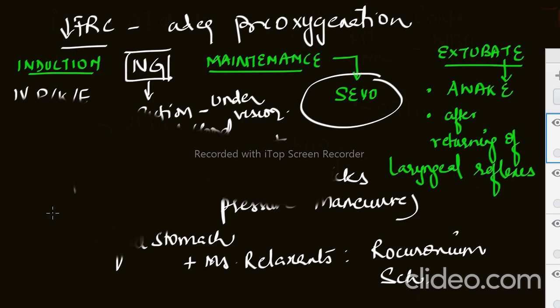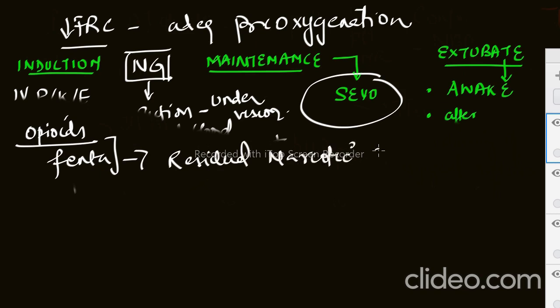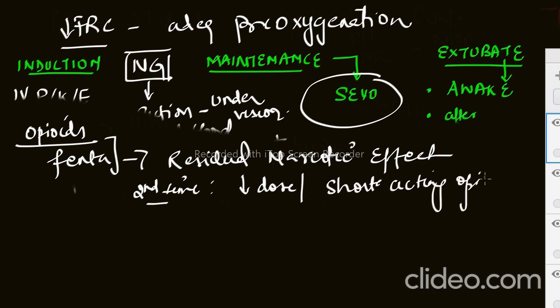Another thing the examiner can ask about is analgesia - what analgesia will you prefer in these patients? First of all, these patients are already post-op, so they must have been given some fentanyl or opioid. There will be some residual narcotic effect left in these patients. So now when you're taking the patient for the second time, you should use very low dose or preferably short-acting opioids. Also, PCM is preferred - around 15 mg per kg you can give for analgesia.